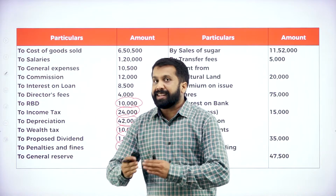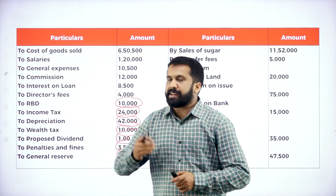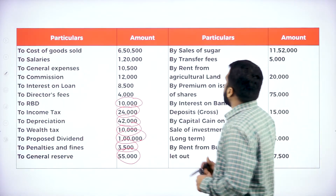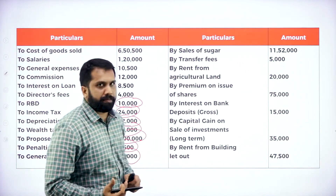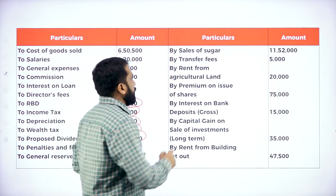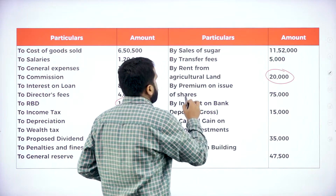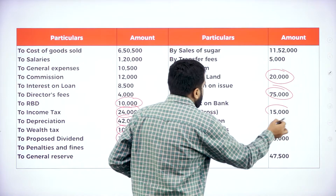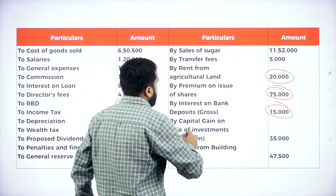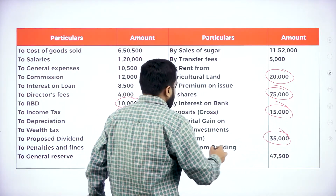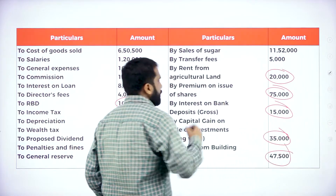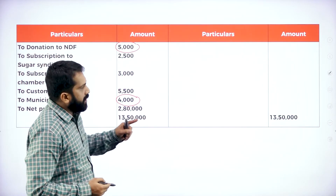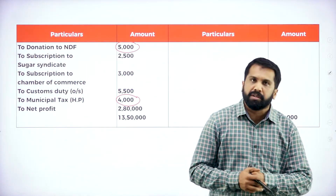What are the other head income items? Sale of sugar is part of your business. Transfer fees also part. Rent from agriculture land — yes. Premium on issue of shares — yes. Interest on bank deposit — yes. Capital gain on sale of investment — yes. Rent from building let out — yes. All these things come under other source items.